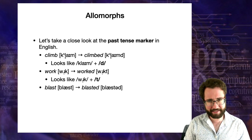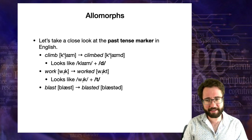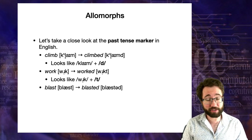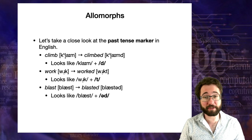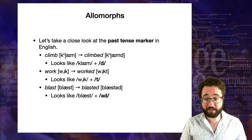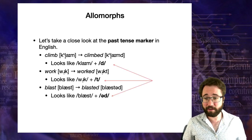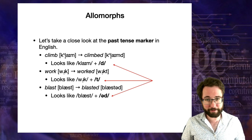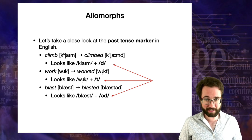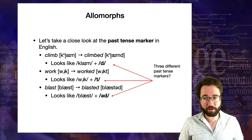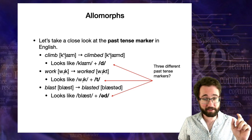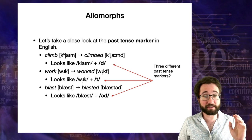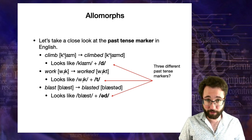What about a word like 'blast'? The past tense is 'blasted'. Notice there is a schwa vowel between the T and the D, so the past tense marker there appears to be UD. So we're in a situation where it looks like there are three different past tense morphemes in English: a suffix D (voiced), a suffix T (unvoiced), or a suffix UD (with an extra vowel).